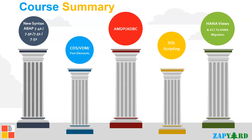If we are in HANA projects, we cannot ignore ABAP Managed Database Procedure, or AMDP. This is applicable only for the HANA database and we need to know how to create and consume them. ADBC and native SQL are also needed in HANA projects and we will cover those. Another topic we will cover in great depth is SQL scripting — no one has covered SQL script at this depth, and our idea is to make you a pro in SQL script by the end of this training.